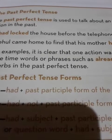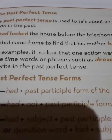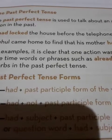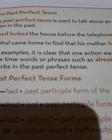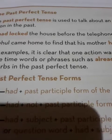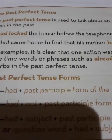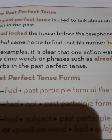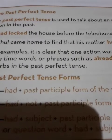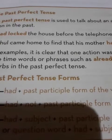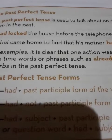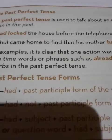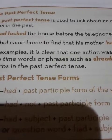Rule 2: in case of past perfect tense, if the sentence is given in negative form, then 'had' plus 'not' plus the third form of the verb is added. For example, number 1: you had not taken the newspaper. Number 2: they hadn't spoken to me.